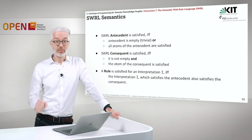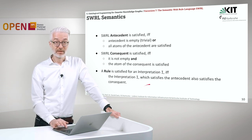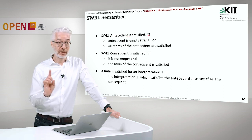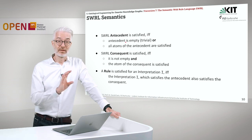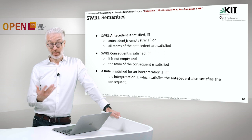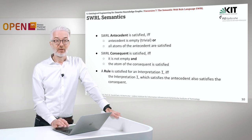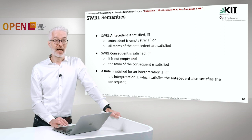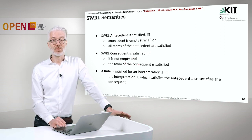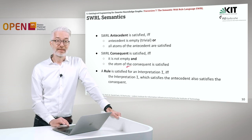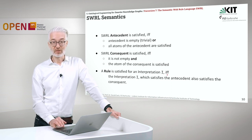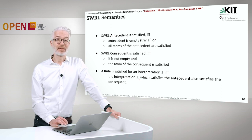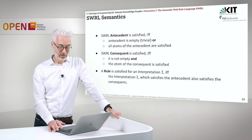A SWRL antecedent is satisfied if and only if either the antecedent is empty — trivially satisfied — or all atoms of the antecedent are satisfied. The consequent is satisfied if and only if it is not empty and its atom is also satisfied. Overall, a rule is satisfied for a specific interpretation I if and only if the interpretation that satisfies the antecedent also satisfies the consequent. That is what we are looking for.